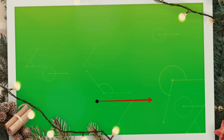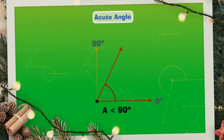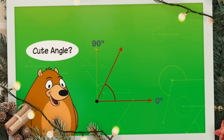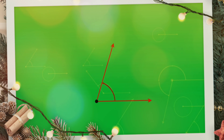Depending on the position of the arms, there are different types of angles. The angle that lies between zero degrees and 90 degrees — that is, less than 90 degrees — is called an acute angle.